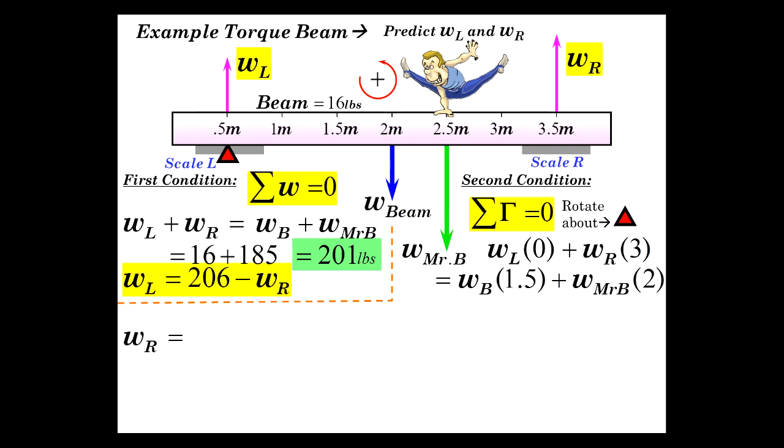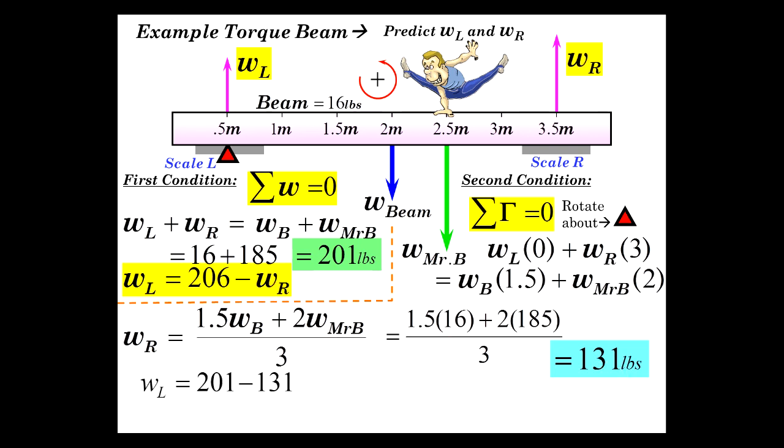So let's solve for weight of the right scale. And that's 1.5 WB plus 2 times my weight over 3. Plugging in numbers, we get 131 pounds. And so now we can just easily sub this supposedly correct reading for the right scale, plug it into this equation and gives us 70 pounds. Of course, we need to measure now and see, look at the bathroom scales. What do they say? Hopefully they will say approximately what we theoretically determined. And I'm sure that you will see that these numbers are very close. And thus, man, you just gotta believe in torque.